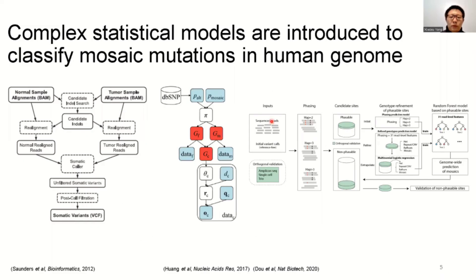Hello, I'm Dr. Xiaoxu Yang, first and co-corresponding author for this work. While detecting mosaic mutations is extremely challenging in the whole genome, complex statistical and machine learning models are used to classify those mutations. Some existing models are built for cancer; some are trained on highly extractive features from the original data. Thus, it's sometimes hard for them to pick up certain artifacts, and they produce false positive results.